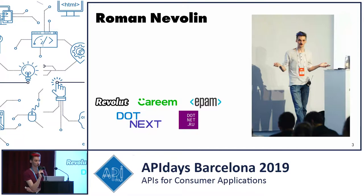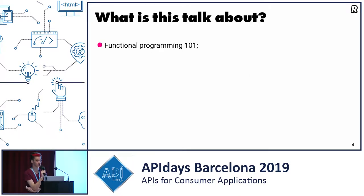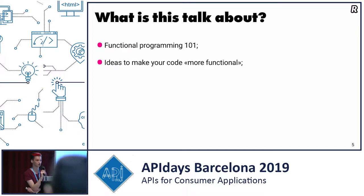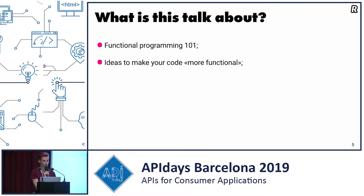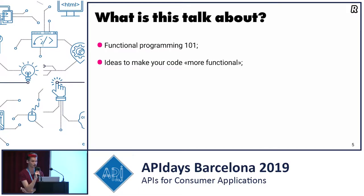What are we going to talk about today? We are going to talk about functional programming 101 — a short explanation of what it is and how it works. We'll talk about how to make your code more functional. Honestly, as a short spoiler, it's even impossible to write an enterprise application fully functional. But I'll give you some tricks. And another important question: why the hell do you need all these things? Because it's a tricky question — functional programming is cool, but sometimes people don't even understand why they're doing it.